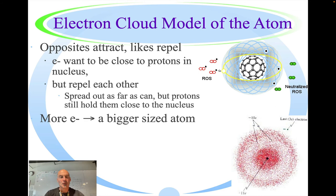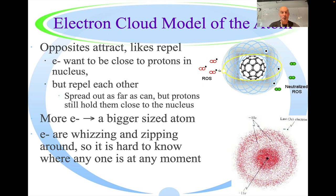So again, more electrons is a bigger-sized atom. They're whizzing and zipping around, so it's hard to know where they are at any moment. Which is why the Bohr model is not necessarily the most accurate. You can only tell where the electrons are likely to be.